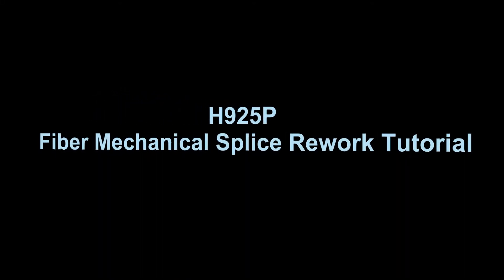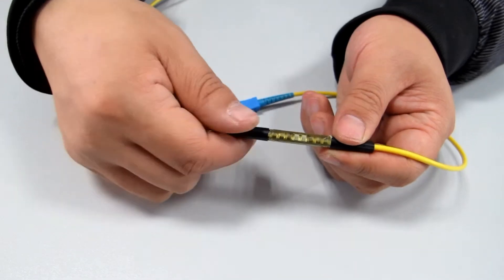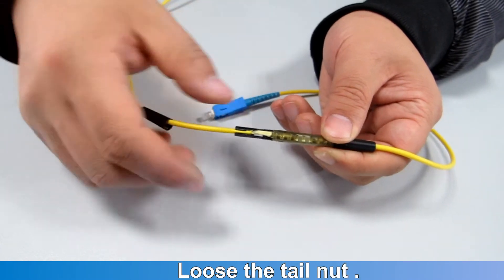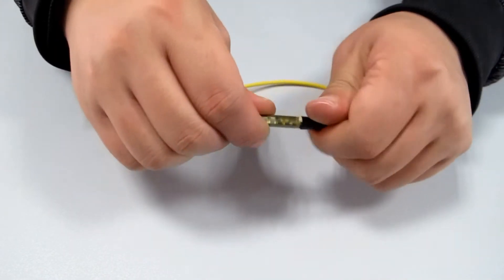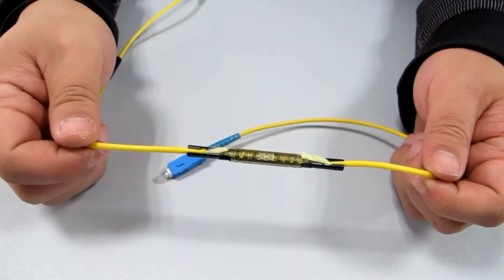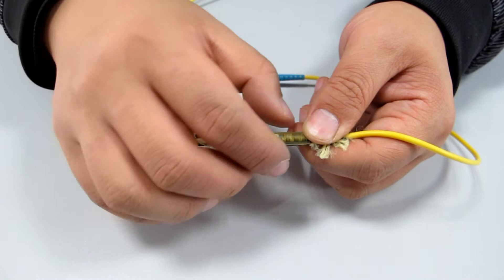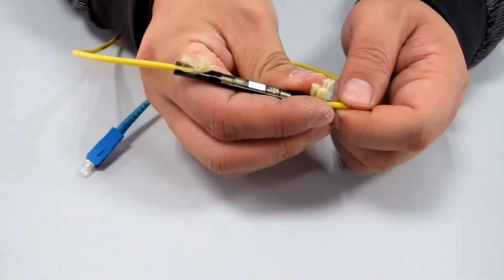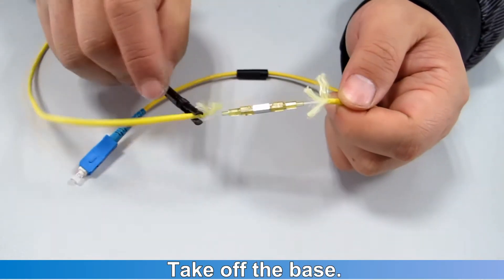H925P fiber mechanical splice rework tutorial. Loosen the tail nut. Take off the cover. Take off the base.